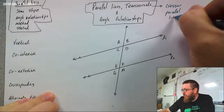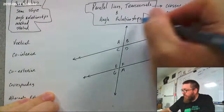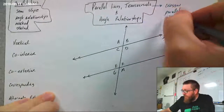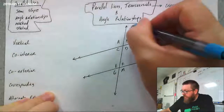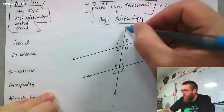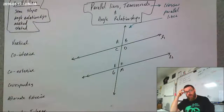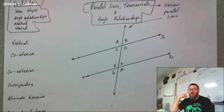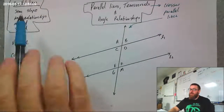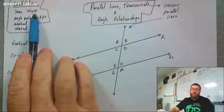On this diagram I've drawn right here, this line right here would be the transversal — it crosses the parallel lines. Now, parallel lines have the same slope.